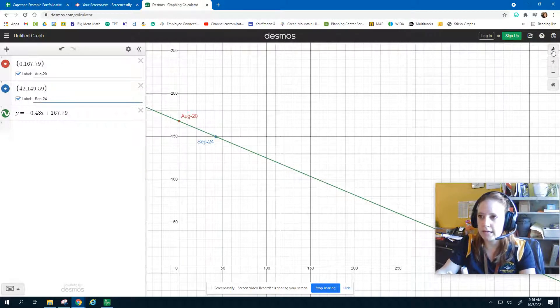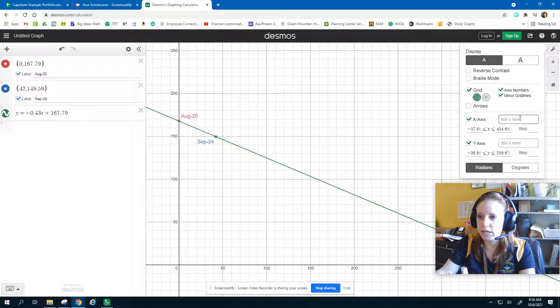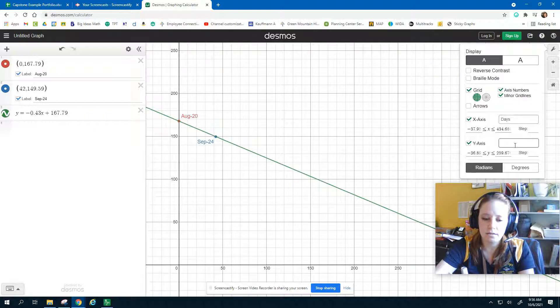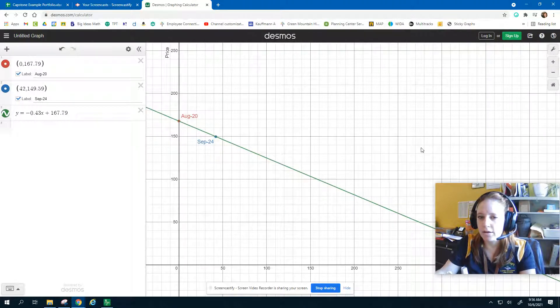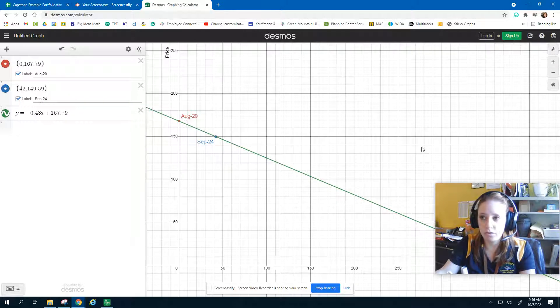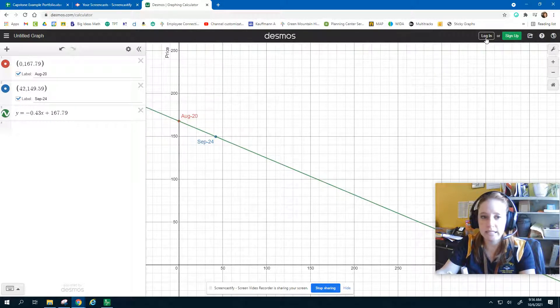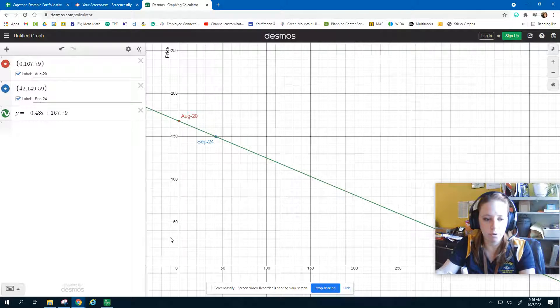Also, I can label the x and y-axis up in the top right corner here, where it says graph settings with the wrench. Click the wrench, and you can add a label to the x-axis, which represented days, and our y-axis represented the price. For now, you can take a screenshot of this, or you can save it by logging in with your Google account. You're going to need this for your portfolio.